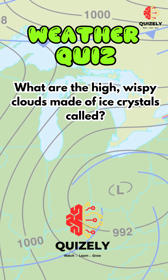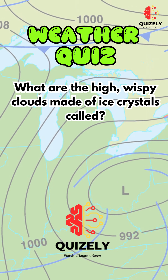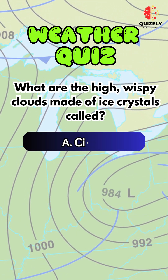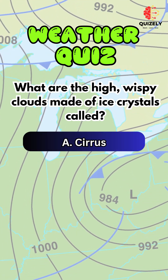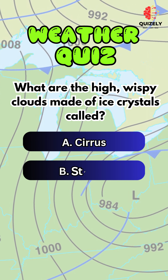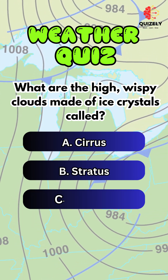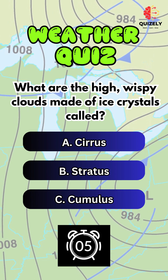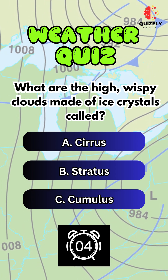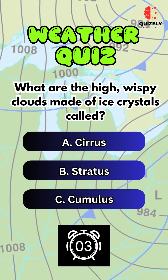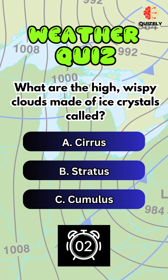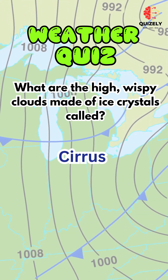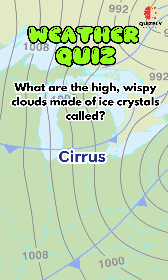What are the high, wispy clouds made of ice crystals called? A. Cirrus. B. Stratus. C. Cumulus. The right option is A. Cirrus.